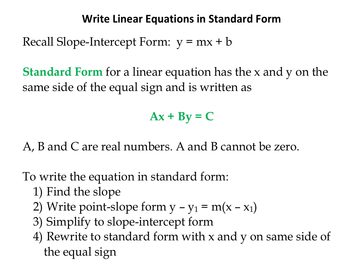We'll see what that looks like. For example — this is just made up — I could have 5x plus 2y equals 7. That would be a standard form example, where a would be 5, b would be 2, and c would be 7.